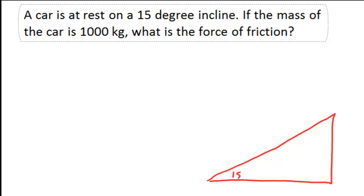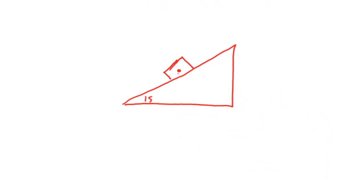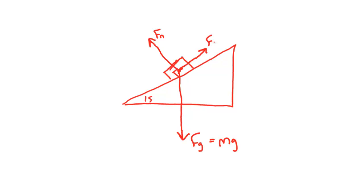I have my 15 degree angle, and I'm going to draw my car as a box on the incline. The first force acting on it, always, is going to be the force of gravity, equal to mass times the acceleration due to gravity. We also have the normal force, which is not always straight up and down, but rather perpendicular to the surface — normal forces are often called perpendicular forces. And we also have the force of friction going in the opposite direction that the object wants to move, which is downhill.